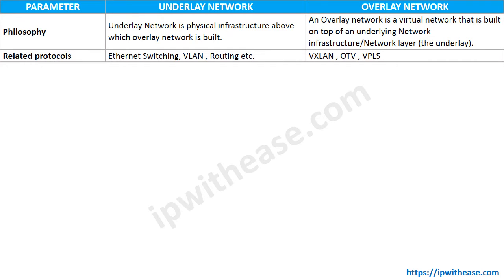Next, related protocols. Ethernet switching, bridging, hubs, VLAN, routing, and firewalls all come under the remit of the underlay network. While overlay networks are basically tunnels formed on top of the underlying network, and these tunnels and logical connectivity are called VXLAN, OTV, and VPLS.